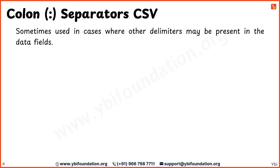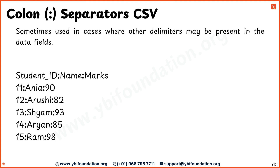Sometimes, when other delimiters like commas, semicolons, or tabs are already present in the data fields, a colon can be used as the separator. This helps avoid conflicts and keeps the data organized. The colon separates the fields, providing a clear structure while avoiding any confusion with other characters that may be part of the data itself.